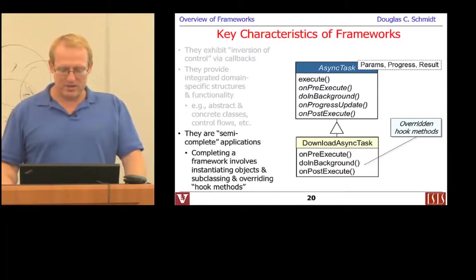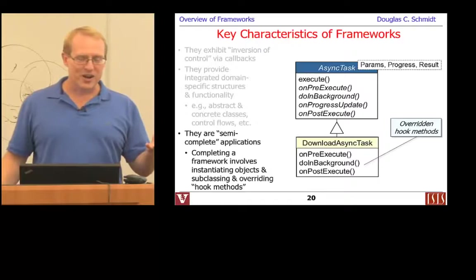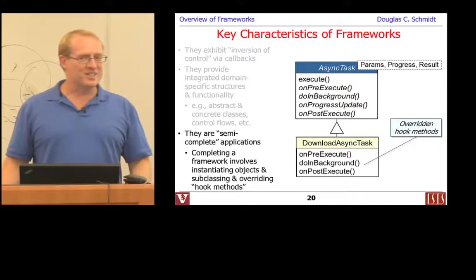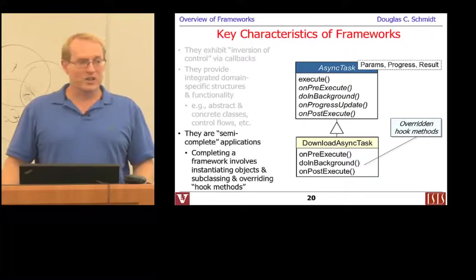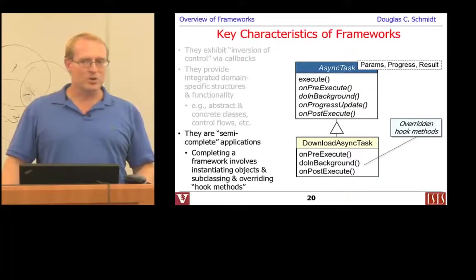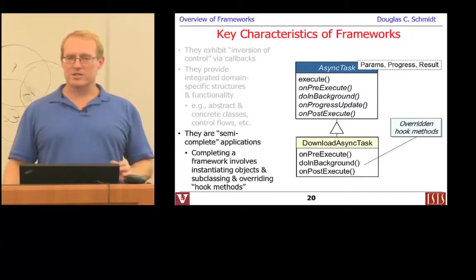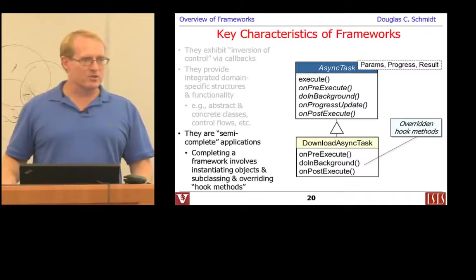That's an example of completing or specializing a framework by instantiating subclasses and overriding hook methods to do your bidding. AsyncTask doesn't know what your hooks need to do, but it does lots of other stuff. By the way, the AsyncTask code is available in open source form in the Android release itself — if you want to learn how this works, I strongly encourage you to take a look. It uses futures, an active object-like model internally, and a bunch of interesting patterns to implement the framework itself.